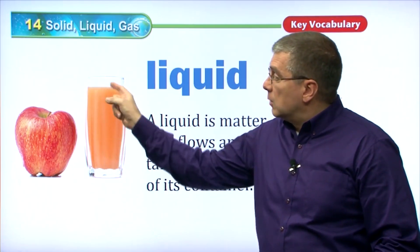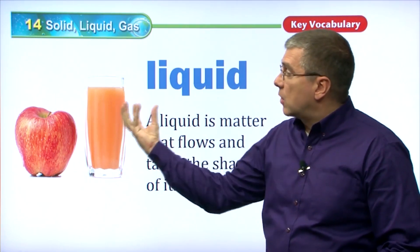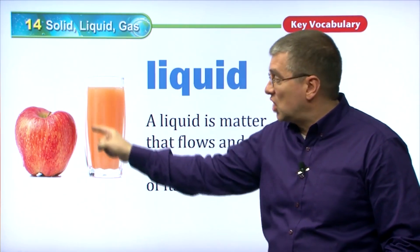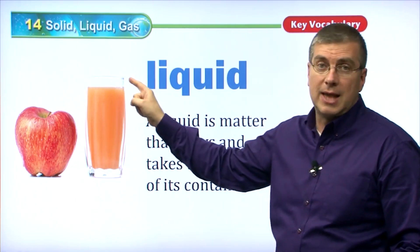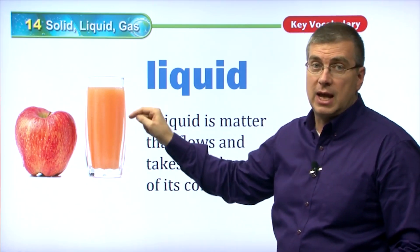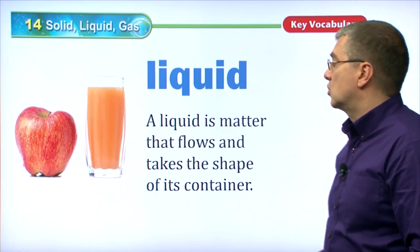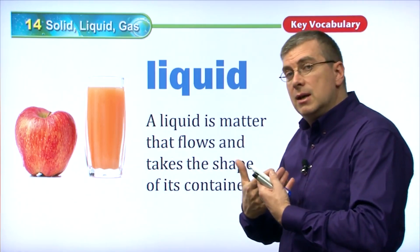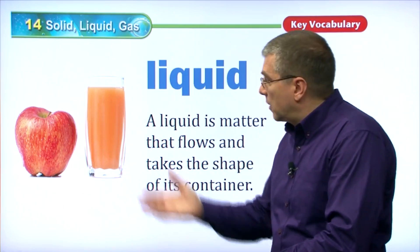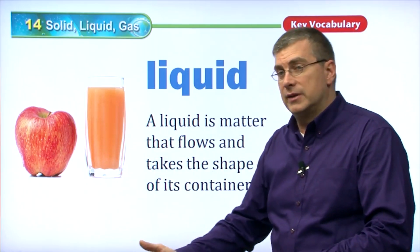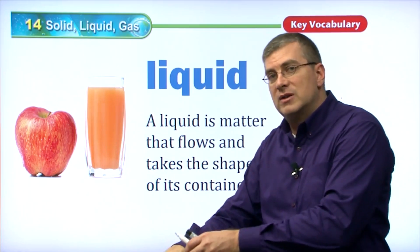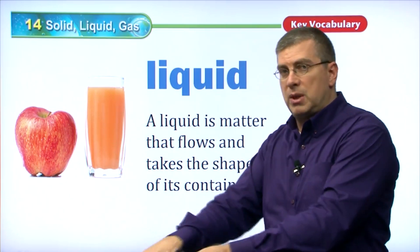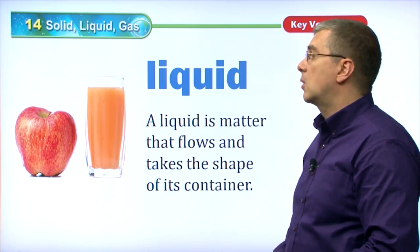A liquid takes the shape of its container. So this glass, which is a solid, is holding the liquid on the inside — the liquid takes the shape of the solid glass on the inside. Also, liquid will flow out. Gravity will make it flow from a high place to a low place. Liquid will always seek the lowest place, following the pressure of gravity.